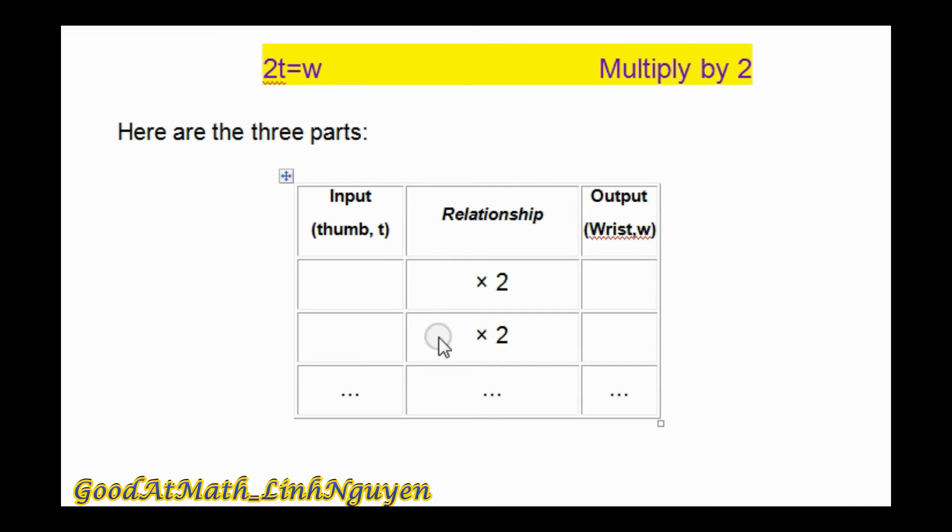So if thumb is 2 inches, then wrist is 4 inches. If thumb is 3 inches,